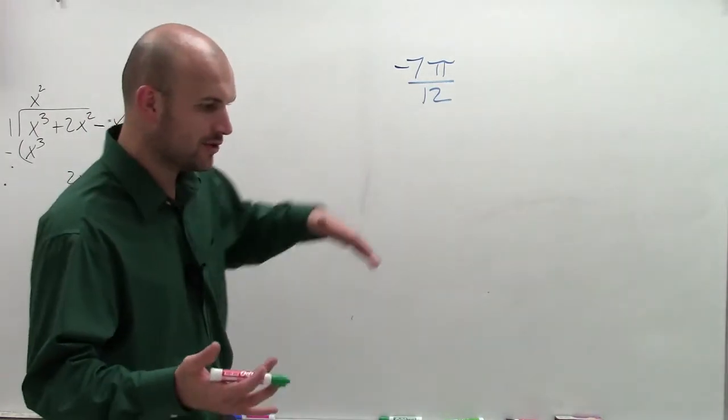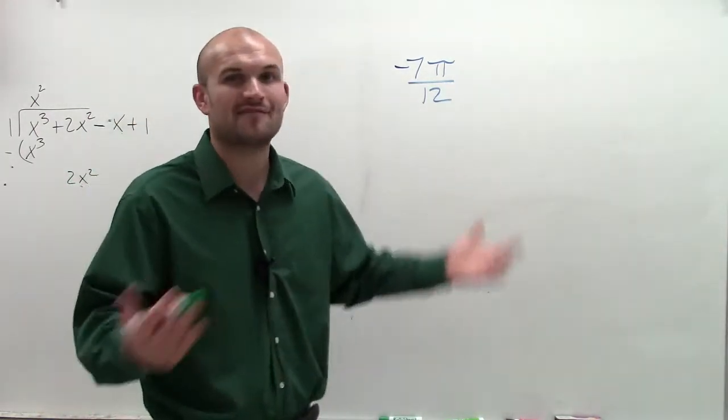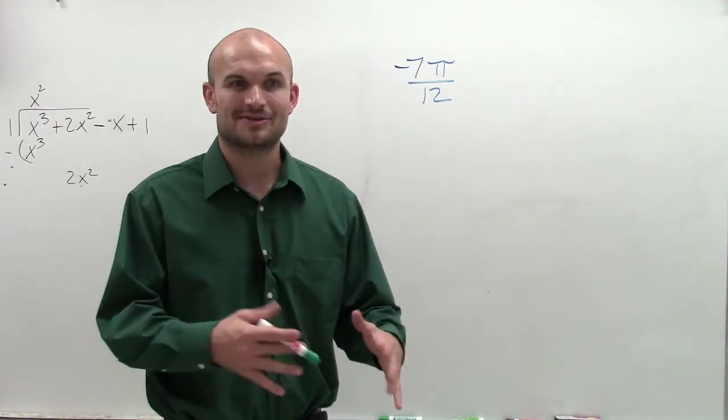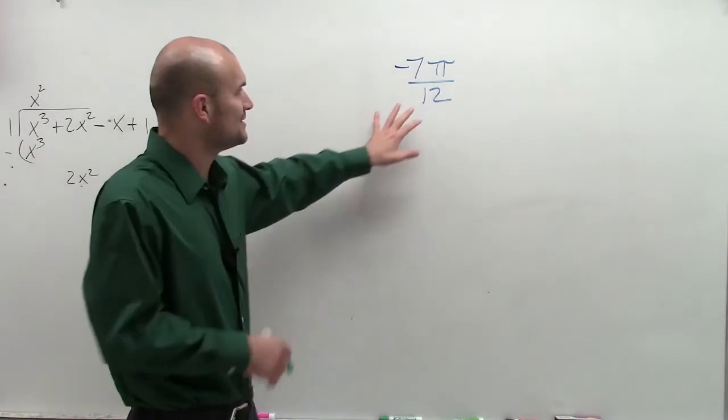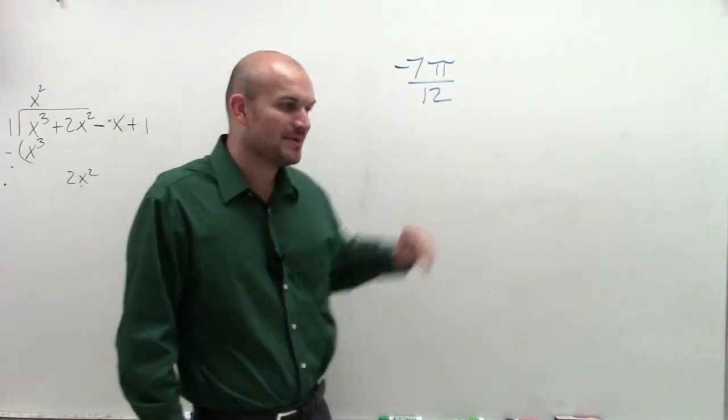So one thing we need to know is, when we're going from radians to degrees, we don't have pi in there, right? It's just your degrees, and usually it's not in terms of pi. So what I need to do is look at how I can get rid of this pi symbol.